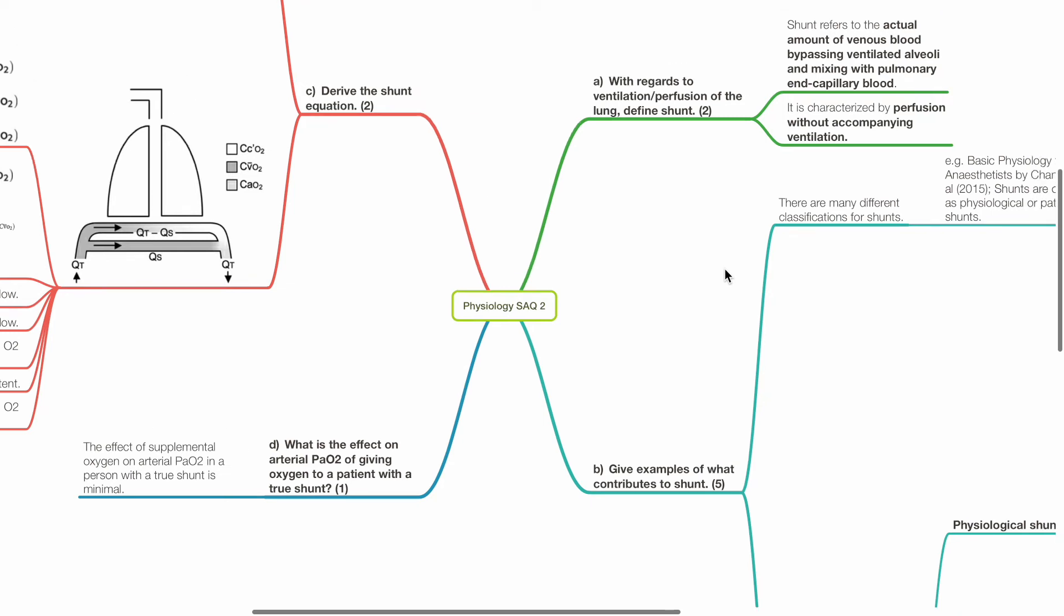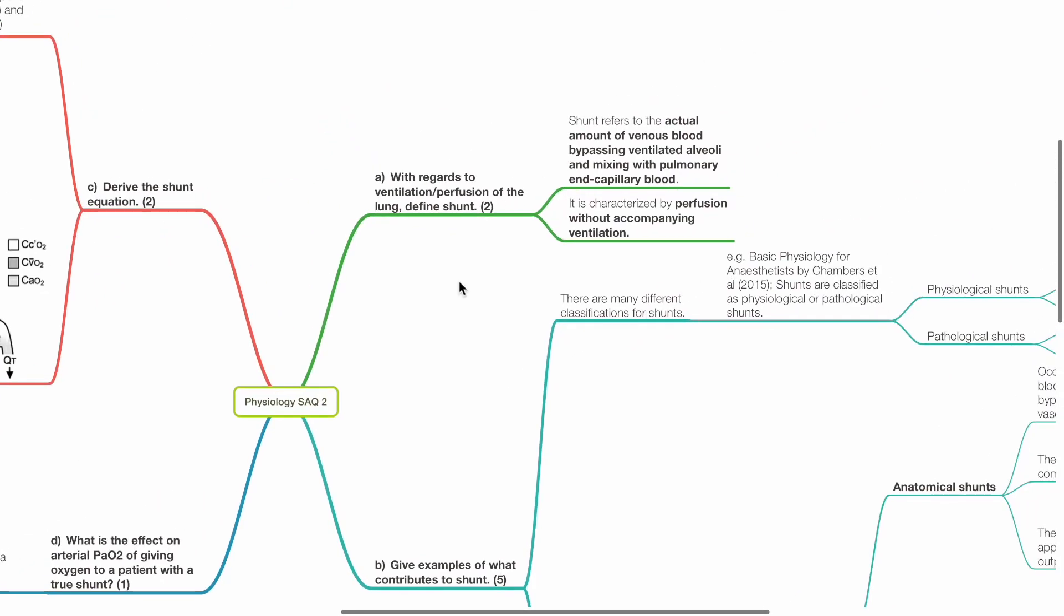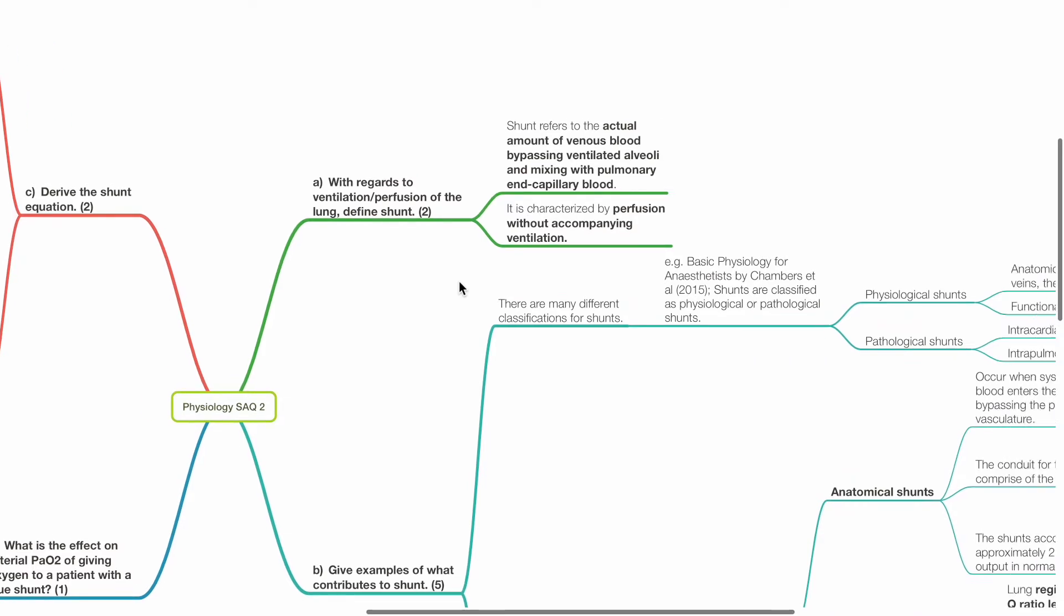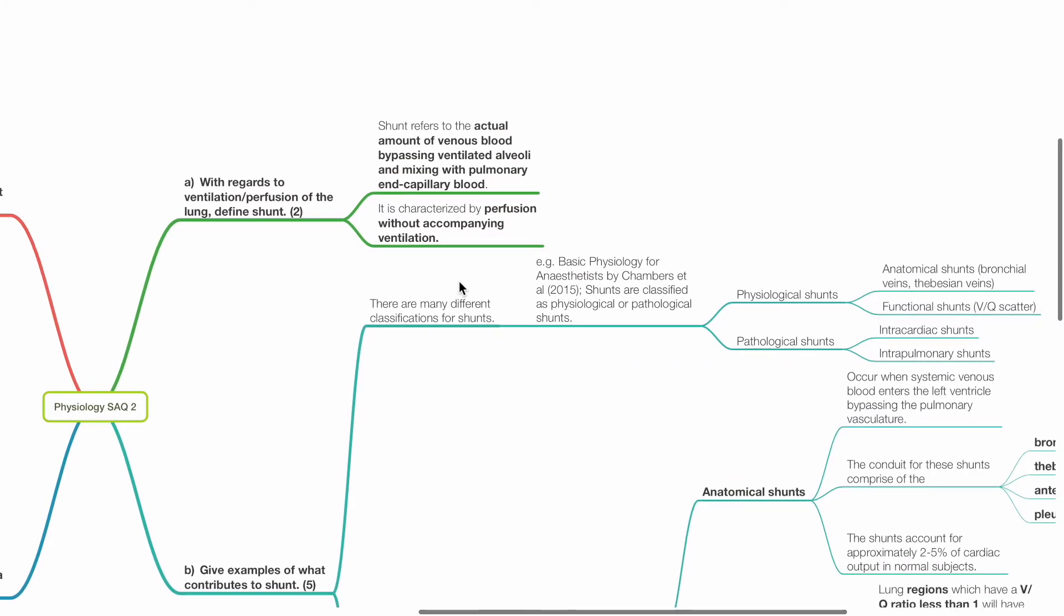Physiology SAQ 2. With regards to ventilation and perfusion of the lung, define shunt, 2 marks. Shunt refers to the actual amount of venous blood bypassing ventilated alveoli and mixing with pulmonary and capillary blood. It is characterized by perfusion without accompanying ventilation.